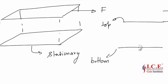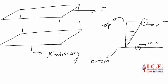The velocity of the fluid near the bottom stationary surface will be zero, while the velocity of the fluid at the top plate will be V. So there will be a velocity gradient, or change in velocity with y, and this type of diagram is known as a velocity profile.